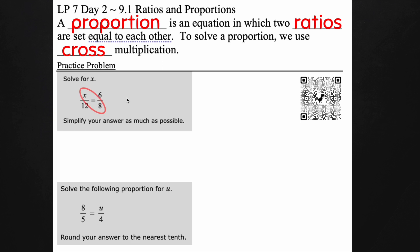So we're going to cross over. I have x times 8 and then I'm going to cross over the other direction and I have 6 times 12. So if you notice there's an equal sign between them.